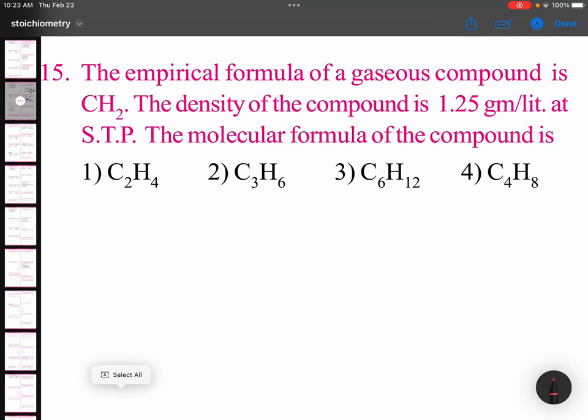The empirical formula of a gaseous compound is CH2. The density of the compound is 1.25 grams per liter. We need to find the molecular formula of the compound. This is a very simple question.